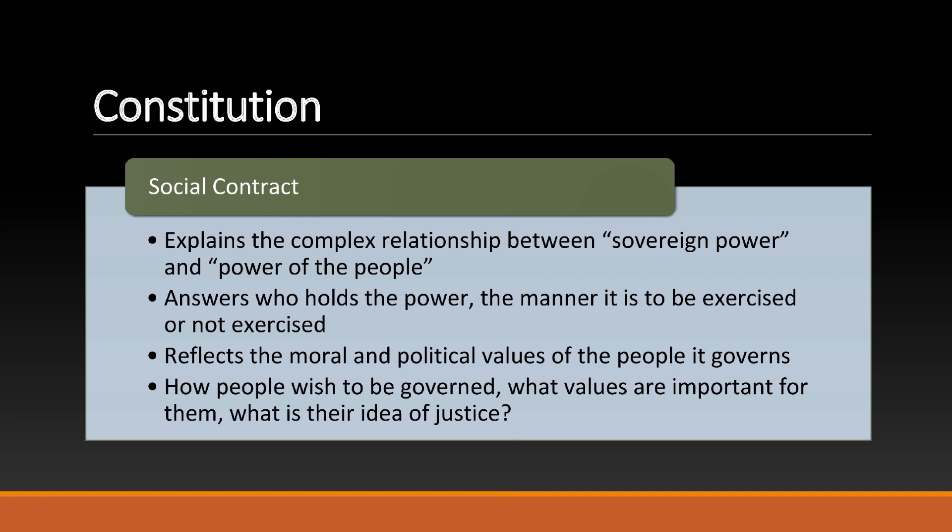The Constitution as a social contract explains the complex relationship between sovereign power and the power of the people. It answers who holds the power and the manner in which it is to be exercised or not exercised. It reflects the moral and political values of the people it governs — how people wish to be governed, what values are important for them, and what is their idea of justice.